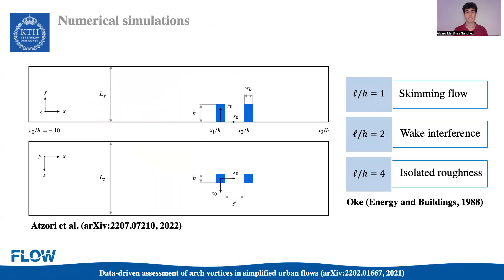In terms of the numerical simulations, we employ data obtained from a well-resolved large-eddy simulation consisting of the turbulent flow around two finite square cylinders, which represent two buildings separated by a given distance, which we denote with the parameter L. You can find more details on the numerical methods and the statistics of these simulations in the work of Adzori and others, which has been recently published in archive. Depending on the separation between these two obstacles, we may find different flow regimes.